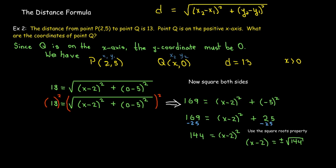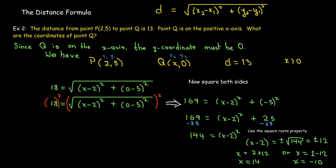Since 144 is exactly 12 squared, x - 2 equals ±12. So either x = 2 + 12 = 14, or x = 2 - 12 = -10. Since Q must be on the positive x-axis, we discard x = -10. Therefore x = 14, and the coordinates of point Q are (14, 0).